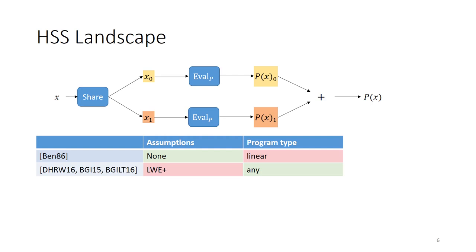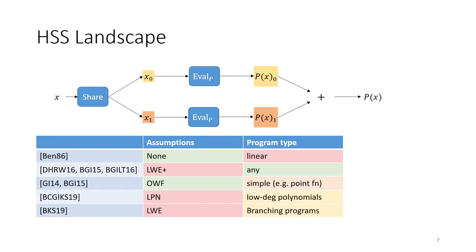At the other end of the scale, using learning with errors and a circular security assumption we can actually build HSS for any class of functions. Unfortunately this construction isn't really efficient as it builds on top of expensive forms of fully homomorphic encryption. In between these two extremes there are quite a lot of different possibilities depending on what assumptions we want to use. Using just one-way functions we can build HSS for simple types of functions like point functions, whereas using learning parity with noise we can build HSS for more powerful classes like low degree polynomials, and assuming LWE without expensive FHE we can get HSS for branching programs, which includes logarithmic depth circuits.